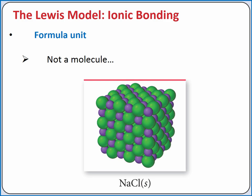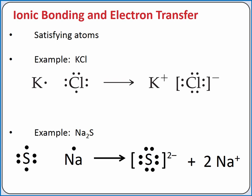The formula unit is the smallest whole number, electrically neutral ratio of ions. Formula units are not molecules. We would rarely see just one sodium and one chloride ion together. Instead, sodium chloride exists as a repeating pattern of cations and anions in a crystal lattice. We can use the Lewis model to predict the ratio of cations and anions that produce an electrically neutral formula unit.